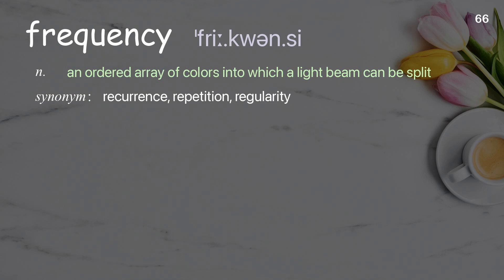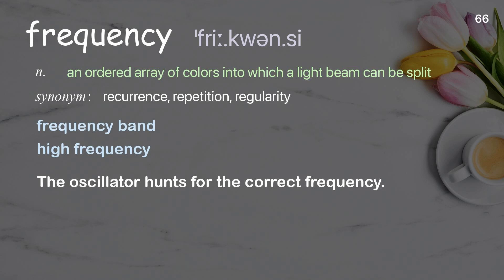Frequency: an ordered array of colors into which a light being can be split. Examples: frequency band, high frequency. The oscillator hunts for the correct frequency.